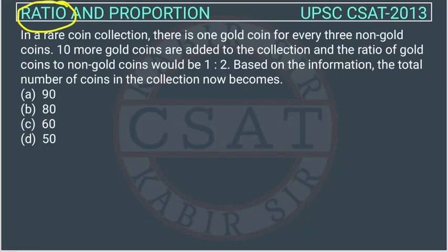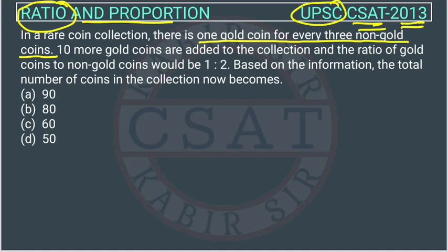This is a question of ratio and proportion asked by UPSC in CSAT paper of 2013. In a rare coin collection, there is one gold coin for every three non-gold coins. So what they have given is the ratio between gold coins and non-gold coins - for every gold coin there are three non-gold coins.